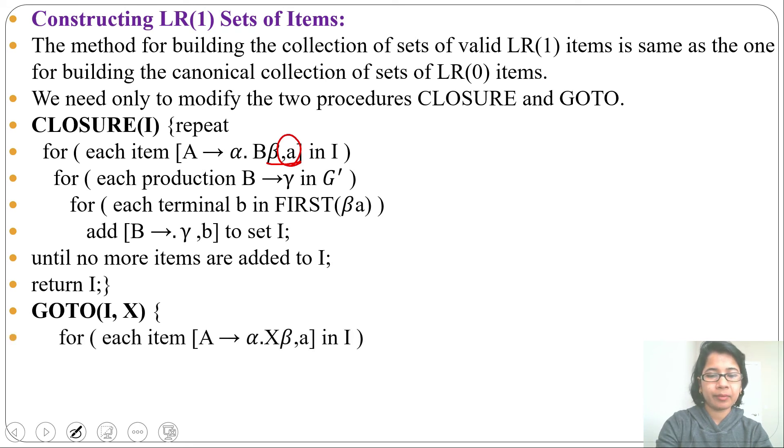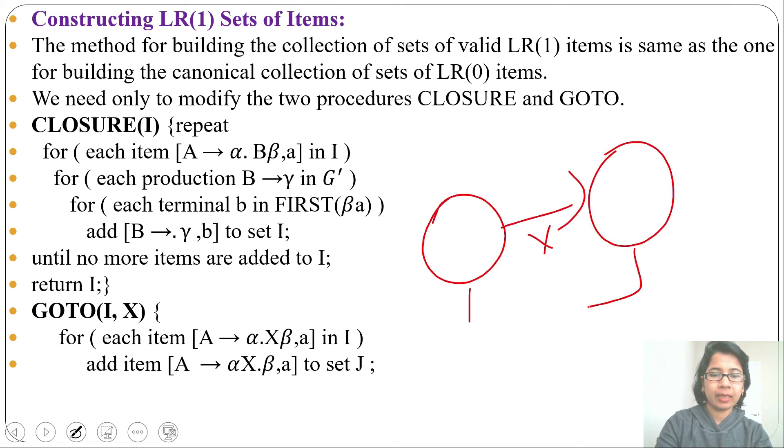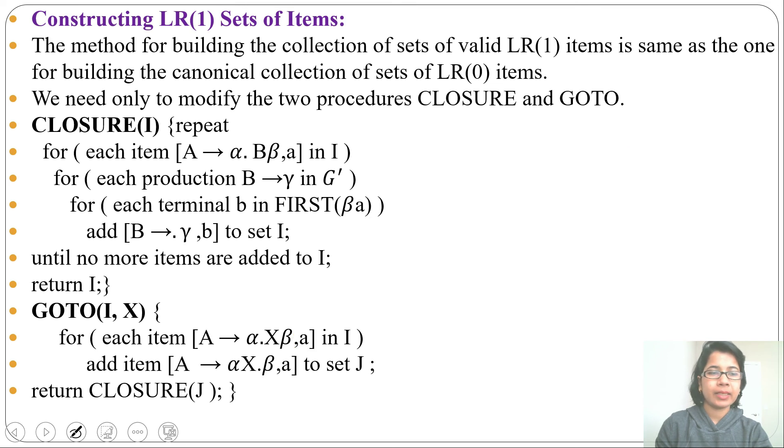For each item [A → α·Xβ, a]—means by X it will go to another state—their production will be [A → αX·β, a], and this a will be same. Here one state is I. By X we are going to state J. So whatever lookahead present here, that will be same in state J. And return closure of J. If this β is a variable, then you need to add closure of that. This is all about CLOSURE and GOTO.